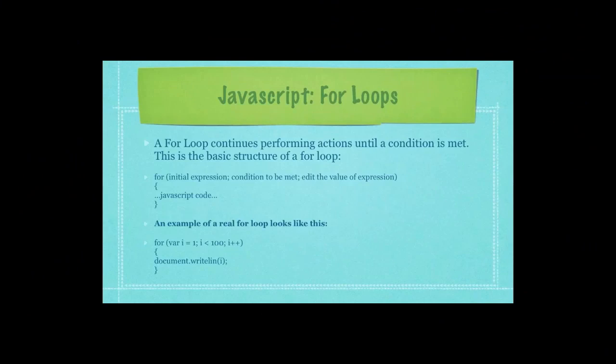For loops. A for loop continues performing actions until a condition is met, quite simply. This is the basic structure of a for loop. First you have the keyword for, followed by your initial expression, which will be a value that you are going to perform operations on. Then you have to define how long this loop will continue until a certain condition is met. And then finally you have the point in which you would actually edit your expression.